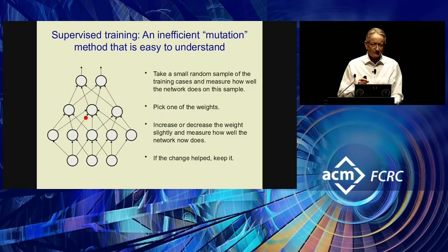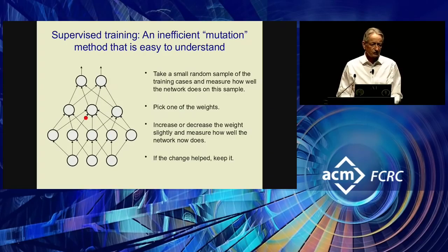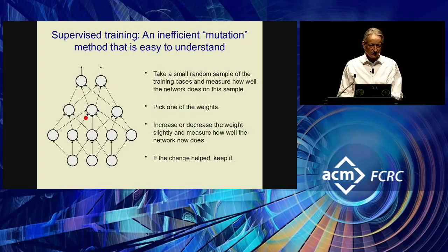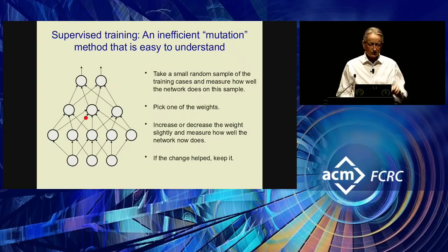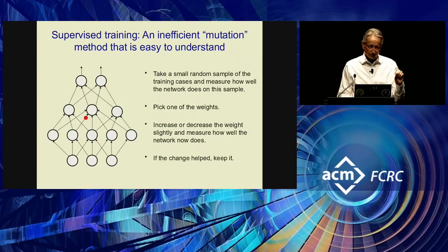Here's a really inefficient way to do supervised learning using a mutation or reinforcement method. You take your neural net, give it examples, see how well it did, then change one weight slightly and see if it does better or worse — keeping the change if better, throwing it away if worse. This is incredibly slow. What it achieves can be achieved many, many times faster by backpropagation. You could think of backpropagation as just an efficient version of this algorithm.